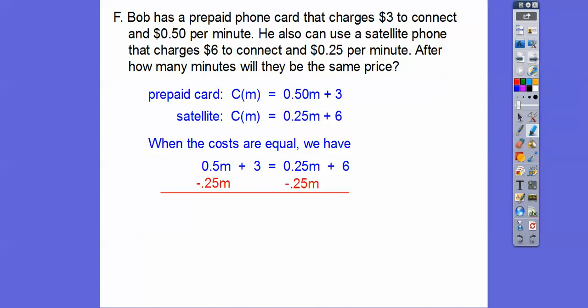So I'm going to subtract 0.25M on both sides. So I get 0.25M plus that 3 equals 6. Now we're going to subtract 3 on both sides. And I asked my students the other day, I said, how many quarters make a dollar? And they all said 4, and I said, okay, so how many quarters will make $3? And they finally figured out it was 12. So this goes into this 12 times. So when we divide, we get M equals 12.